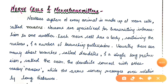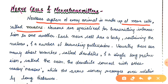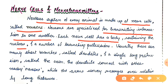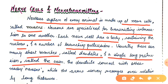Now we will see nerve cells and neurotransmitters. The nervous system of every animal is made up of nerve cells called neurons. These neurons are specialized for transmitting information to one another. Each nerve cell has a body containing the nucleus and a number of branching protrusions — usually many short branches called dendrites and a single long protrusion called the axon. Dendrites connect with nearby neurons while axons convey messages over relatively long distances.